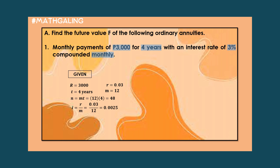The I, or the interest rate per period, also needs to be found. The formula is R over M. Substituting, it is 0.03 over 12, which equals 0.0025.